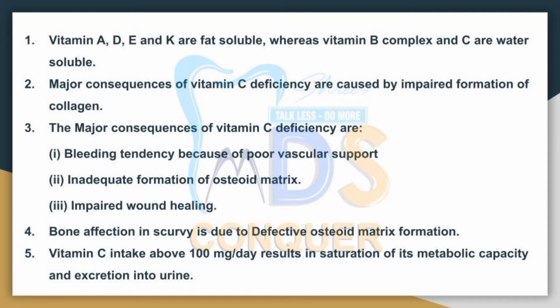No.4: Bone infection in scurvy is due to defective osteoid matrix formation. No.5: Vitamin C intake above 100 mg per day results in saturation of its metabolic capacity and excretion into urine.